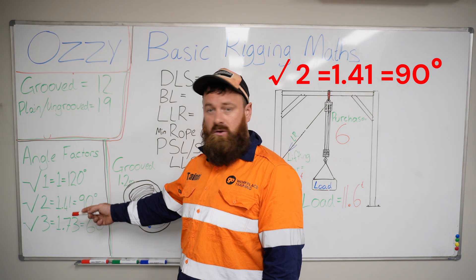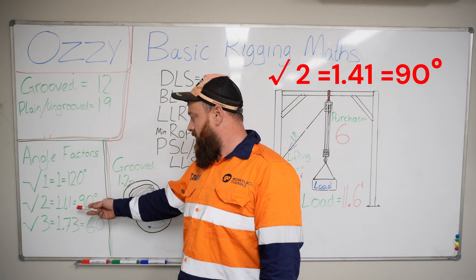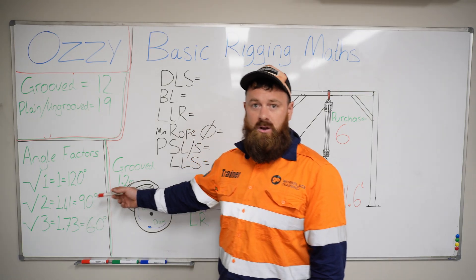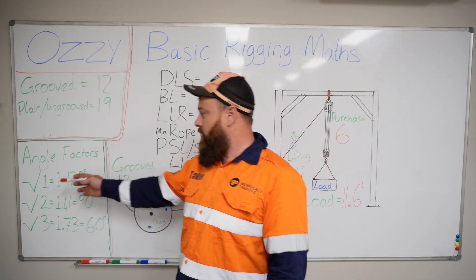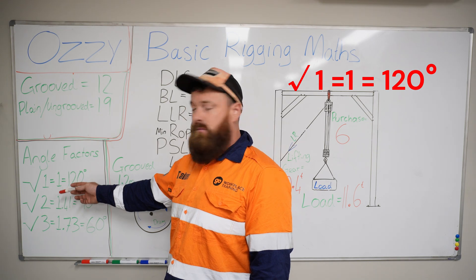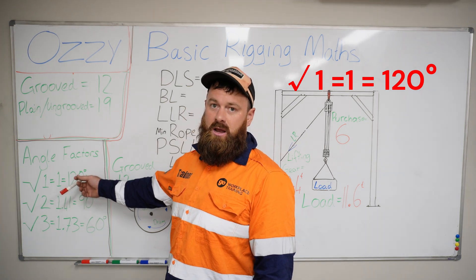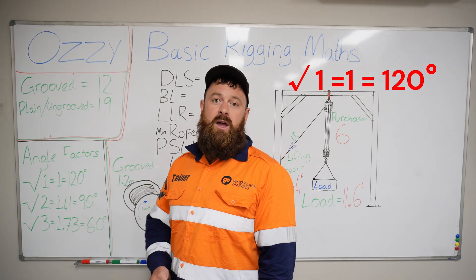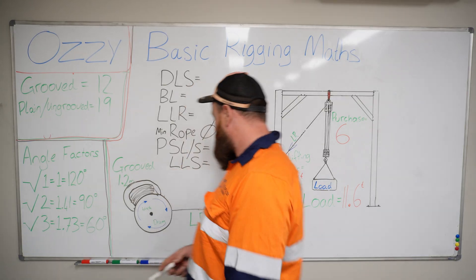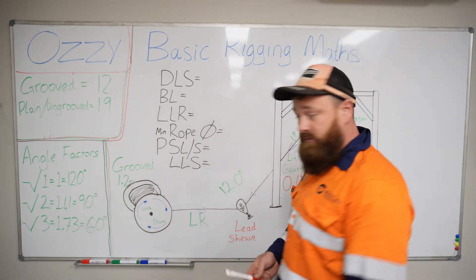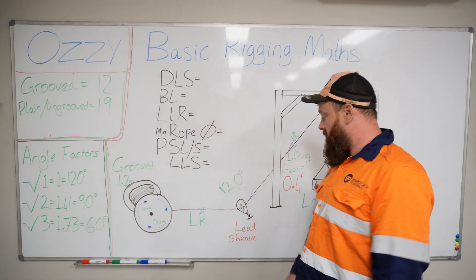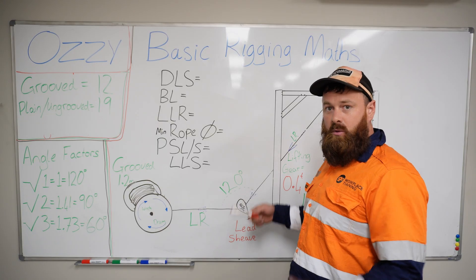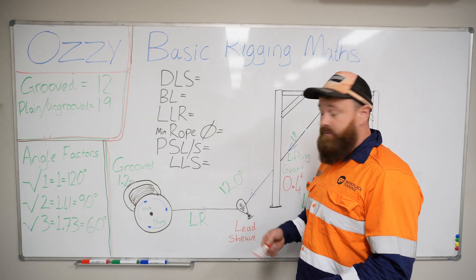If you square root the number 2 you will get 1.41 and that is the angle factor for 90 degrees. If you square root the number 1 you're going to end up with 1 and that is the angle factor for 120 degrees. In this diagram that I've drawn up we have an angle of 120 degrees here and we're going to use that as an example for today.